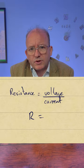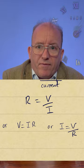In equation form, resistance equals potential difference or voltage over current. Using the correct symbols, R equals V over I. We can, of course, rearrange this so that V is I times R or I is V over R.